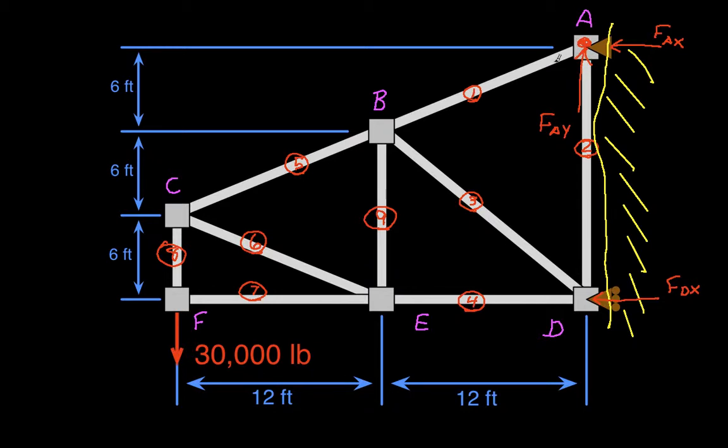We have FAX and FAY, which we've just solved for. We will have the tension in member 1 and the tension in member 2. So if we go to a clean space to draw, and draw our free body diagram, we will have FAX acting on the pin at joint 1.